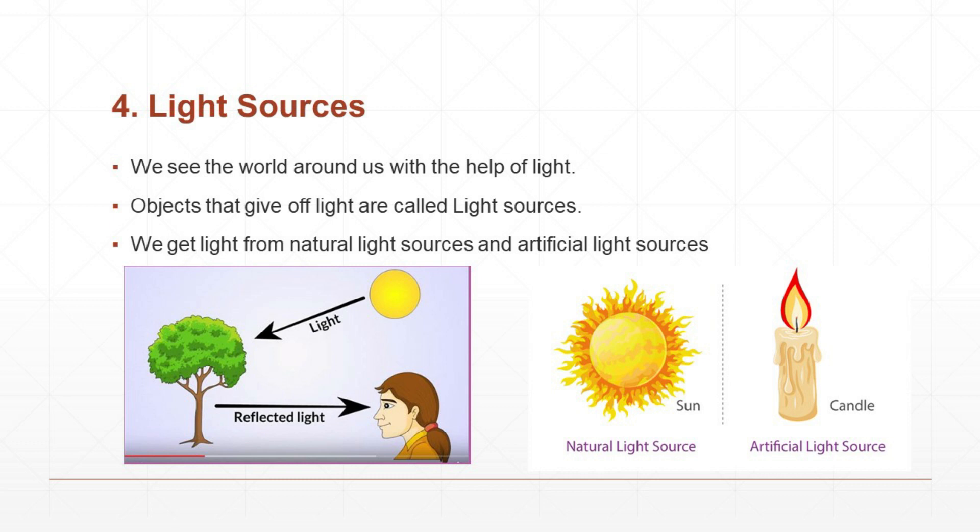Natural light sources — examples: sun, stars, firefly, etc. Artificial light sources — examples: candle, fire, electric lamp or bulb, torch, etc. Light may come either from the sun or from other sources like an electric lamp or a bulb. The objects that give off light are called light sources. We get light from natural and artificial light sources.